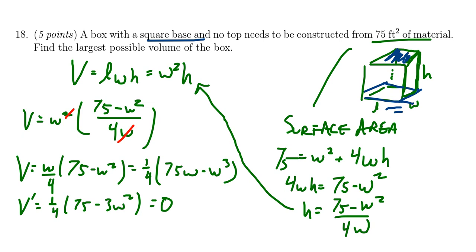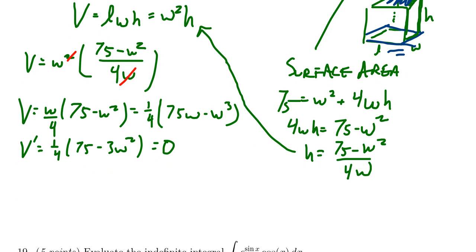We need to find the critical number, so we're going to set this thing equal to zero. The one fourth can be ignored because we can just divide both sides by one fourth. Dividing zero by any non-zero number just gives you zero.